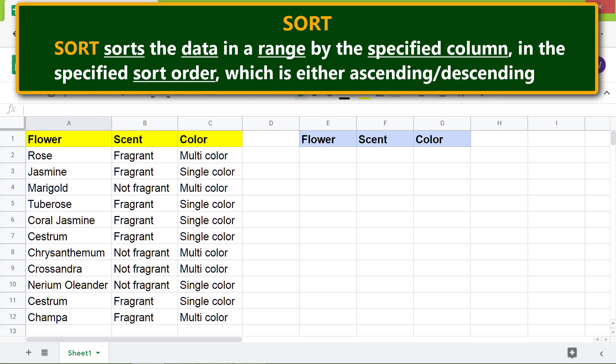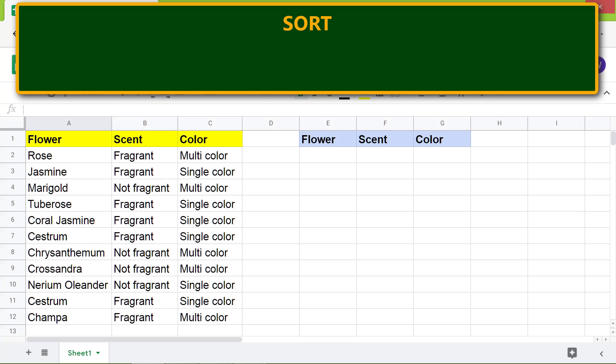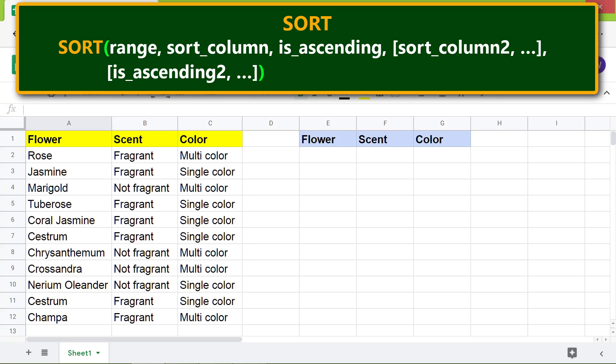SORT sorts the data in a range by the specified column in the specified sort order, which is either ascending or descending. Let's look at the format of the SORT function. In this tutorial, we will use SORT without the optional attributes.